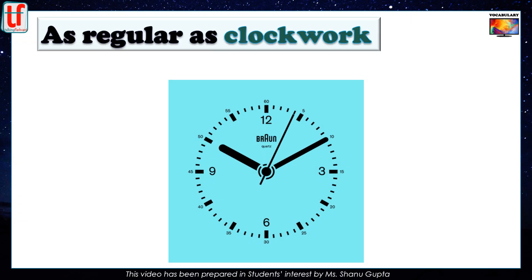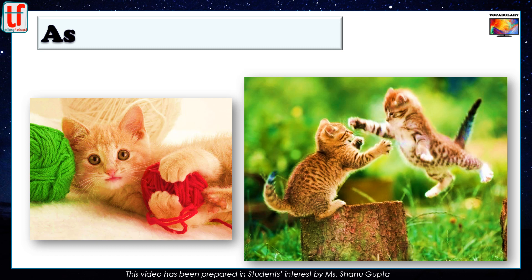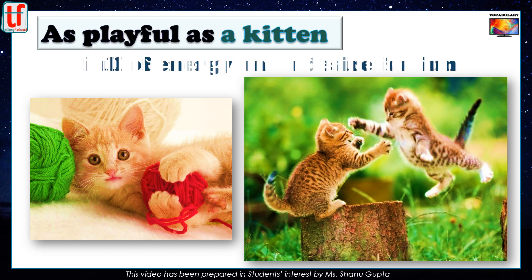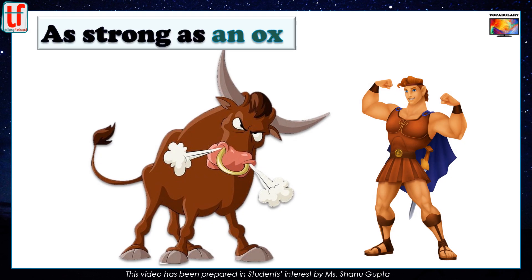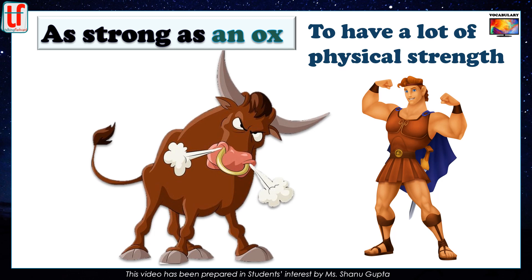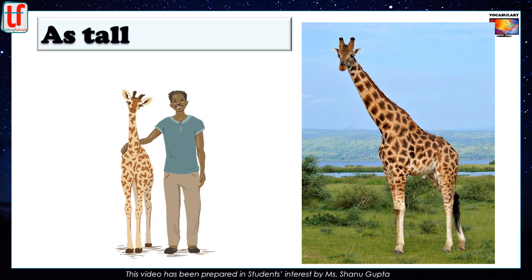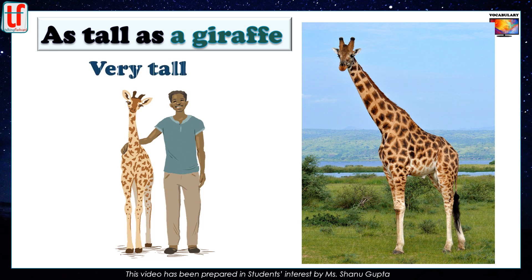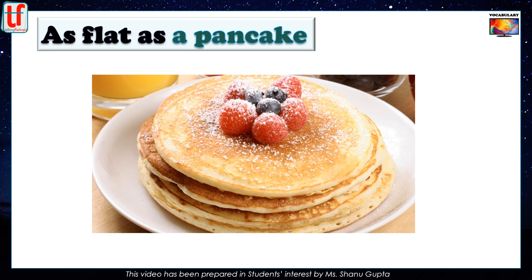As regular as clockwork. The hands of a clock move in regular, repeated, and predictable motion. For example, my mother calls me every morning at 8 o'clock — as regular as clockwork. As playful as a kitten describes someone who is full of energy and a desire for fun. As strong as an ox is used for a person who has a lot of physical strength. As ugly as a toad — it means very ugly. As tall as a giraffe means very tall. As flat as a pancake describes something that is completely flat.